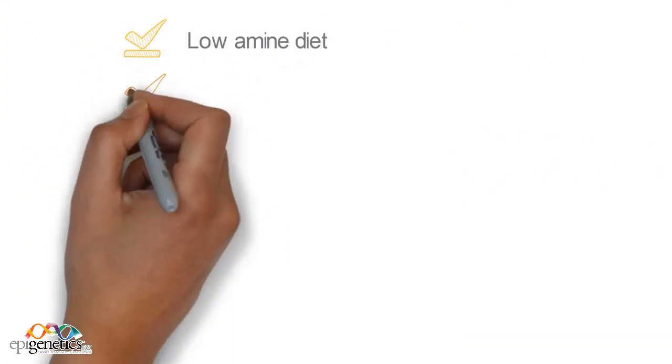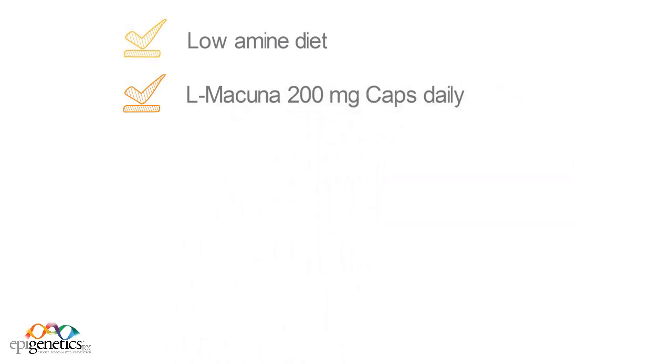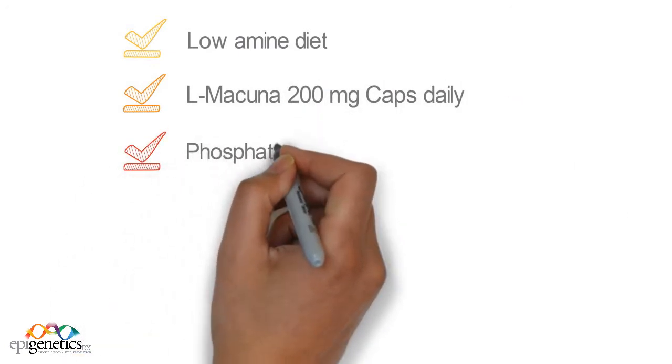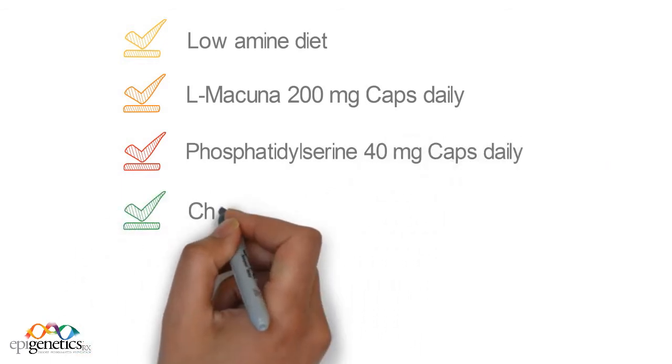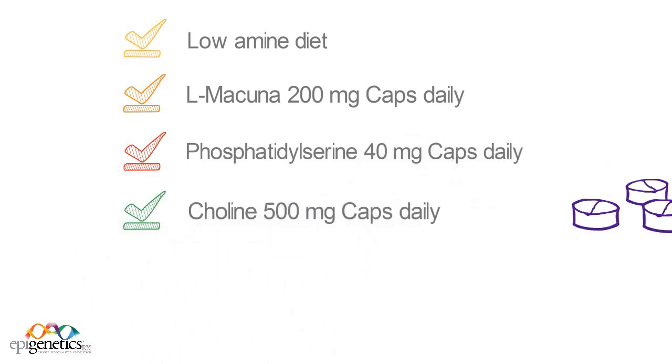The doctor prescribes a low amine diet and L-Makuna 200 milligrams capsules per day to regulate his dopamine. Phosphatidylserine, 40 milligrams capsules per day, and choline, 500 milligrams capsules per day are recommended to calm his overactive adrenals.